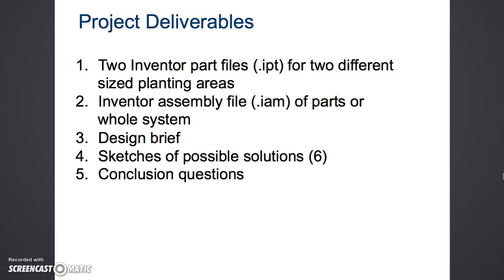By the end of this project, students should have five types of deliverables. The first consists of two Inventor part files for two different sized planting areas or two separate containers. The second is an assembly file showing how the parts or system come together. The third is a design brief about the problem statement and client criteria. The fourth is sketches of possible solutions — if each person develops three, a pair of students would have six. The last deliverable is a set of conclusion questions found in the project document.